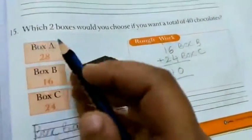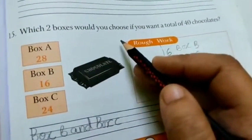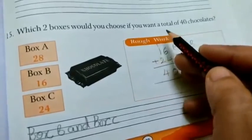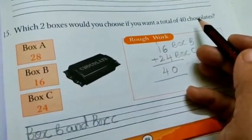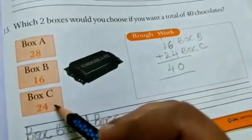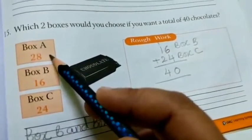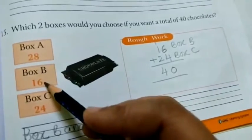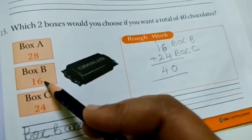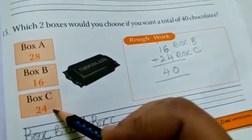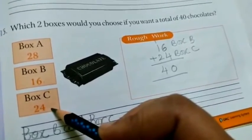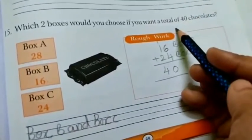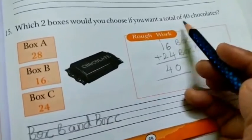Now the 15th one. Which two boxes would you choose if you want a total of 40 chocolates? Here boxes are given to you. In box A, 28 chocolates are there. In box B, 16 chocolates are there. In box C, 24 chocolates are there. To make 40, what we want total? 40 chocolates.